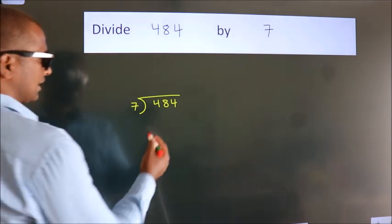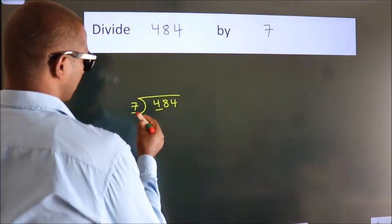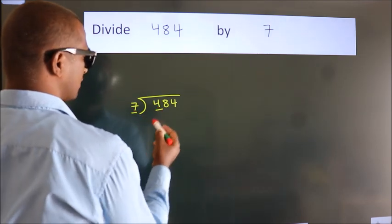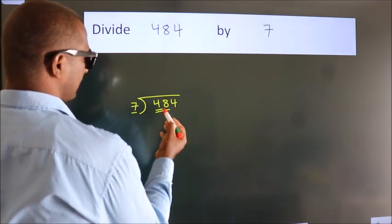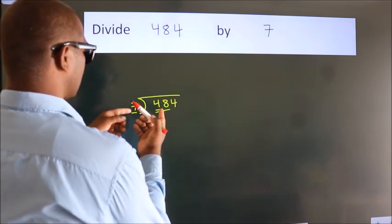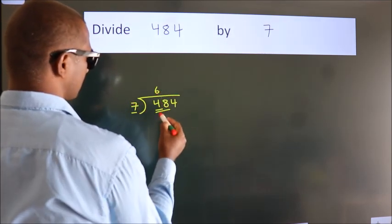Next, here we have 4. Here 7. 4 smaller than 7, so we should take two numbers: 48. A number close to 48 in 7 table is 7, 6, 42.